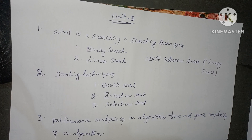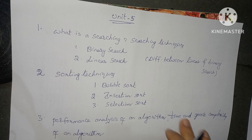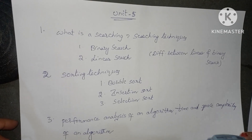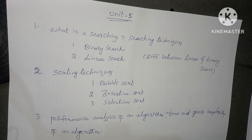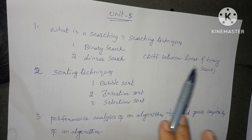Last is Unit 5. Some questions are also covered in Unit 1 — such as what is an algorithm, what is a flowchart, definition of flowchart, definition of algorithm — with additional examples here. The first topic is searching: what is searching and what are the searching techniques? The different types are binary search and linear search.